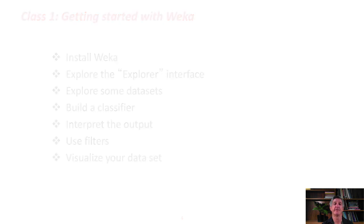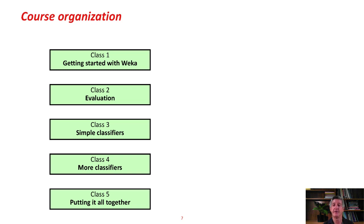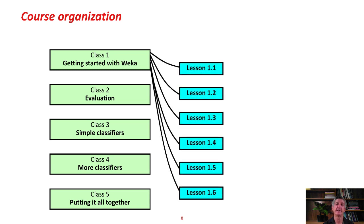Here's the structure of the course. There are five classes altogether, each consisting of about six lessons. Class 1 is getting started with Weka. Then we're going to look at evaluation in Class 2, simple classifiers in Class 3, more classifiers in Class 4, and putting it all together in Class 5.